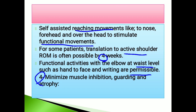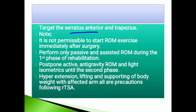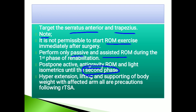Minimize muscle inhibition, guarding, and atrophy — target the anterior deltoid and trapezius muscles. Note: it is not permissible to start active range of motion exercises immediately after surgery. Perform only passive and assisted range of motion during the first phase. Postpone active anti-gravity range of motion and light isometrics until the second phase. Hyperextension, lifting, and supporting body weight with the affected hand are precautions following reverse total shoulder arthroplasty.